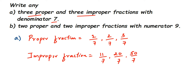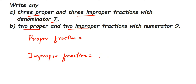Now let's go to the second question. They are asking us to write two proper and two improper fractions with the numerator 9. The numerator is fixed as 9, so let me write 9 as the numerator for these fractions.